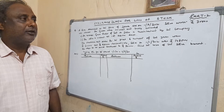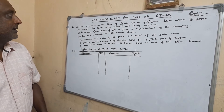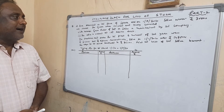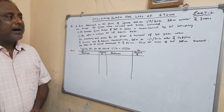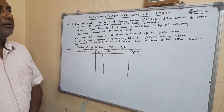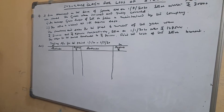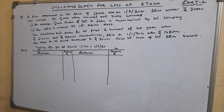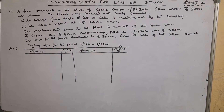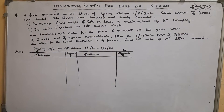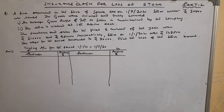Insurance Claim for Loss of Stock, Part 2. A fire occurred in the store of Spark Limited on 1-7-2020. Stock worth Rs. 30,000 was saved. The goods were insured and fully covered.